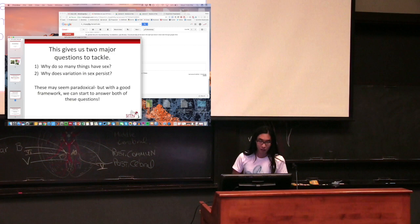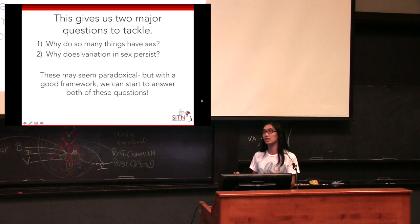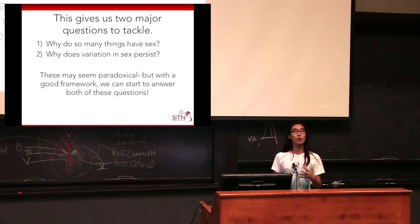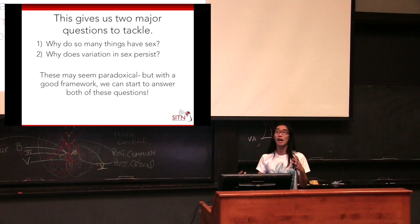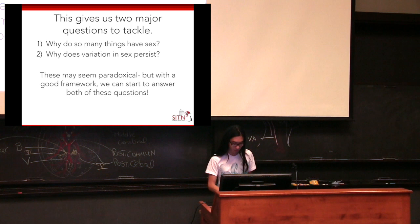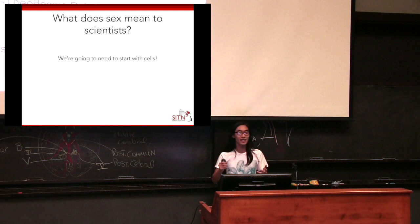This gives us two major questions to tackle. One is why do so many things have sex? And two is why does variation in how these things have sex persist? This may seem like a paradoxical set of goals, because we're trying to explain both why sex is very common and why sex is different. But if we have a good enough mental framework to tackle both problems, we can answer both of them in one fell swoop. I'm a first-year graduate student at the evolutionary biology program at Harvard, and coincidentally the framework we're going to use is evolutionary biology.